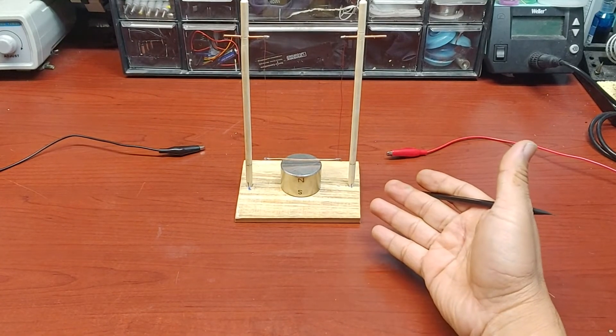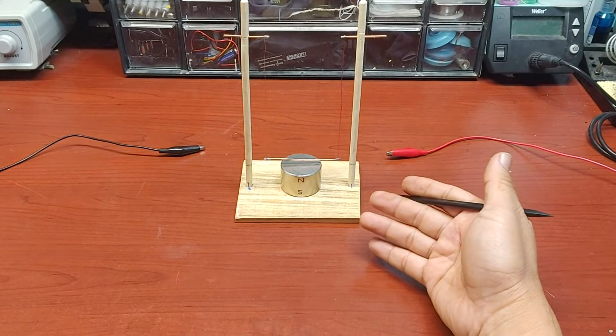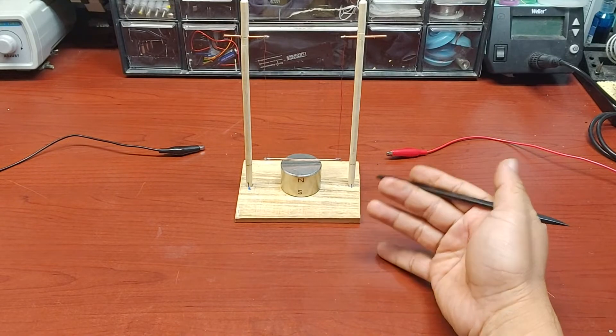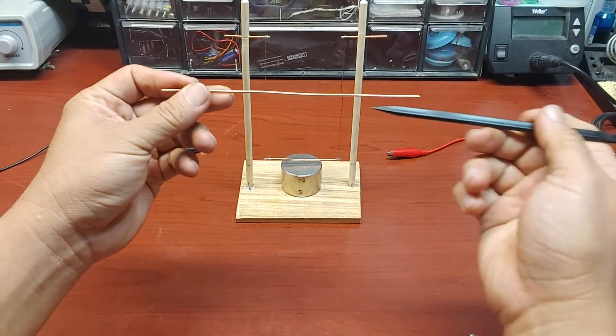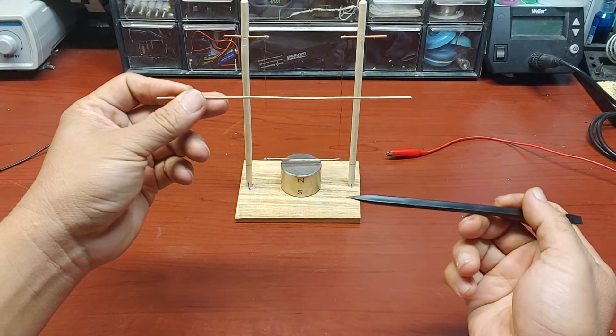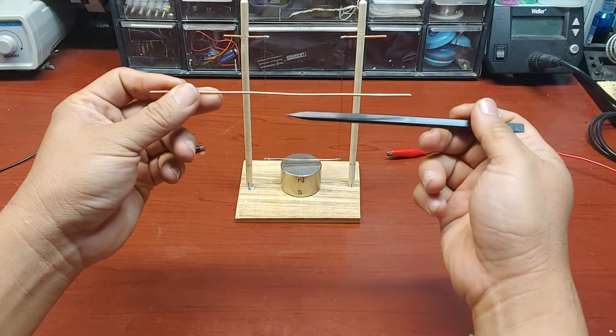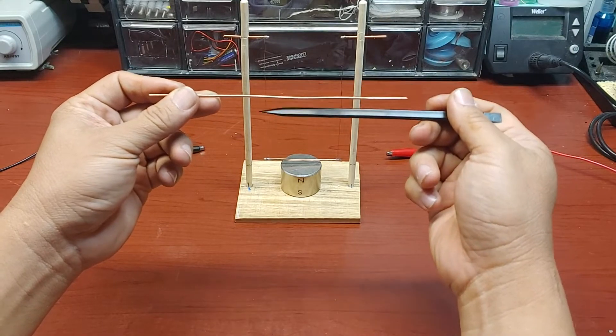This is a simple device repeating an old-time experiment. When electric current flows through a conductor, it generates an electromagnetic field around the conductor.